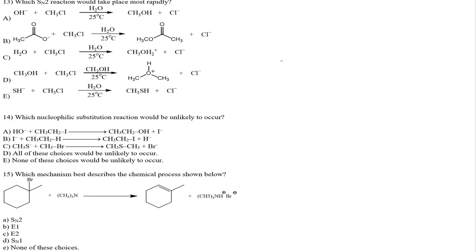Now we have to find which SN2 reaction is most rapid. If the nucleophile is neutral (like water), it would actually be favored via SN1, not SN2. Same for the other neutral case — if there's no metal and no negative charge, it's neutral, favoring SN1 or E1. So we're down to A, B, and E.